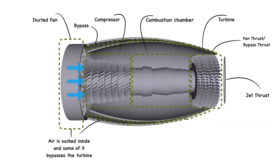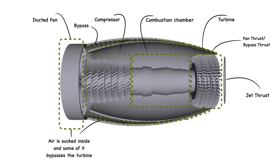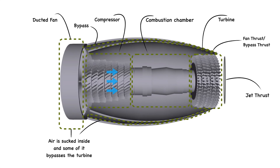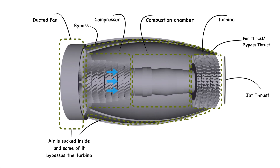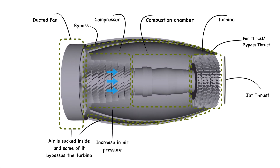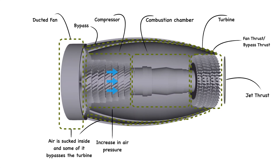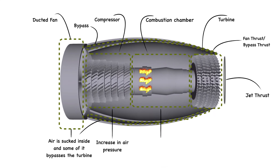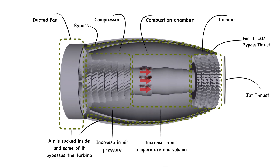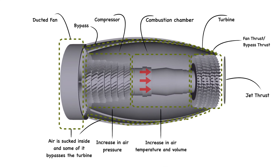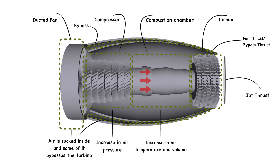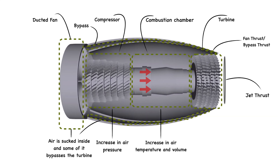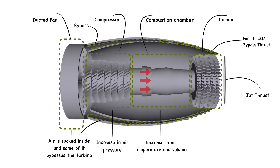The rest of the air enters the compressor, where the gases are compressed and their pressure is increased. These high pressure compressed gases then enter the combustion chamber where they are heated and burn in the presence of oxygen. Here the temperature of the gases is increased dramatically while the pressure is kept constant.